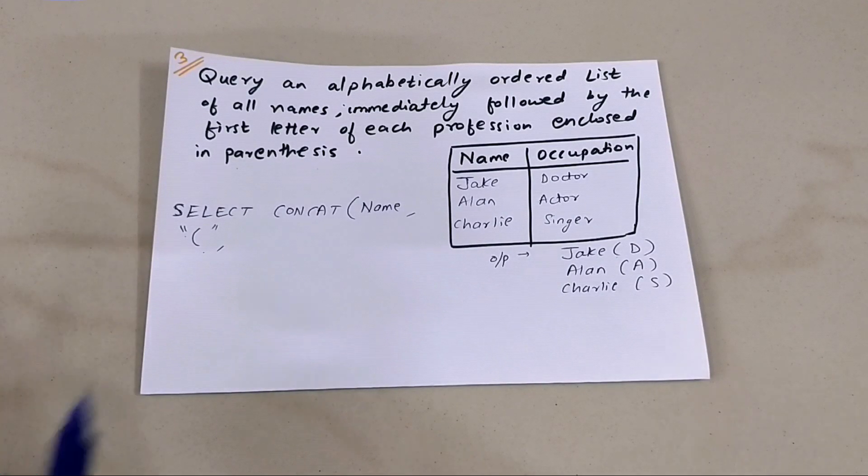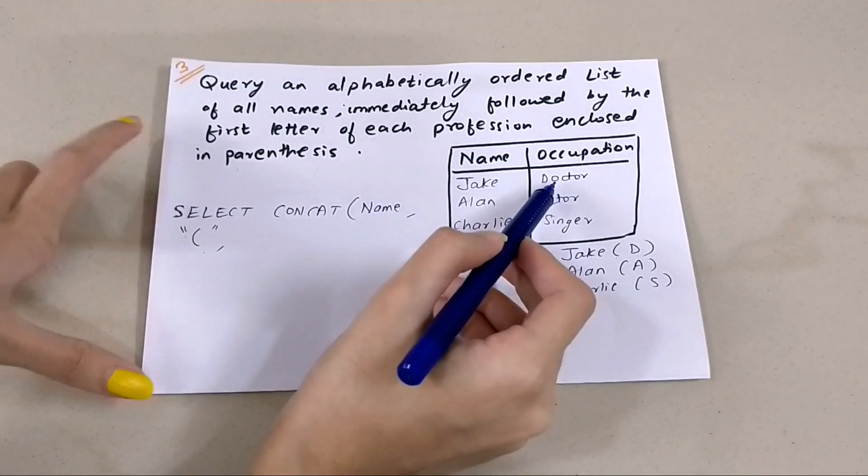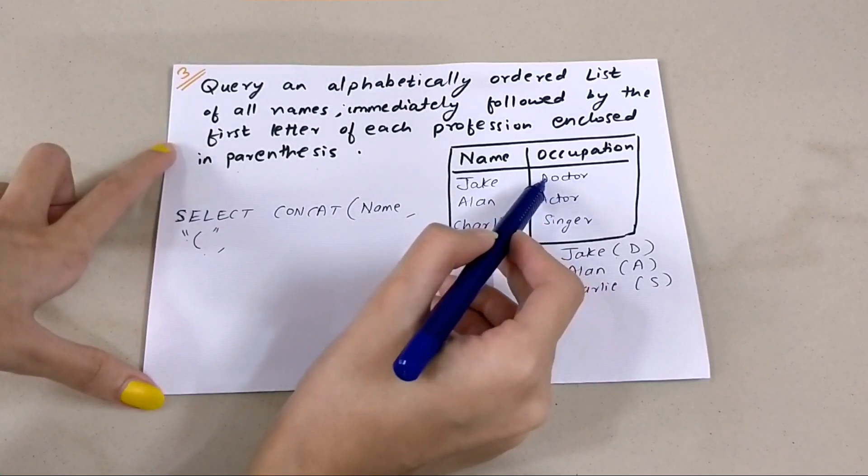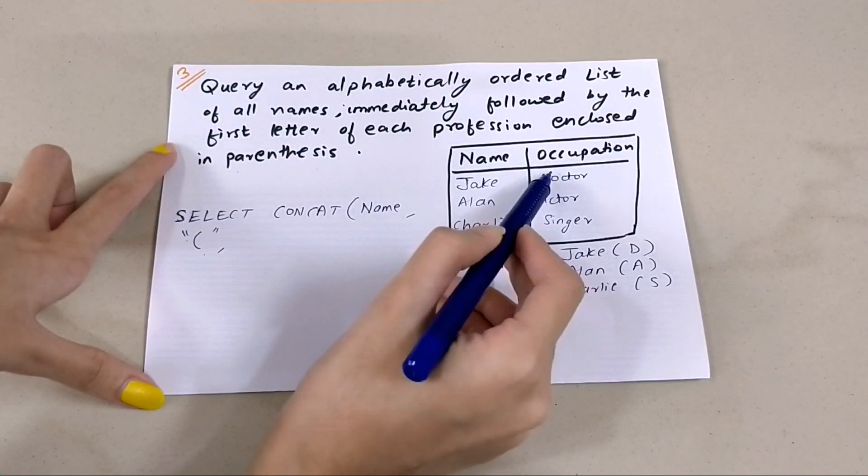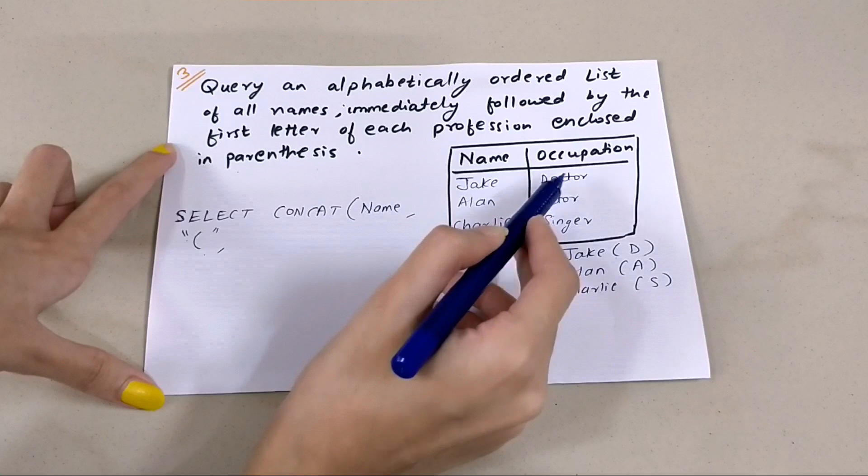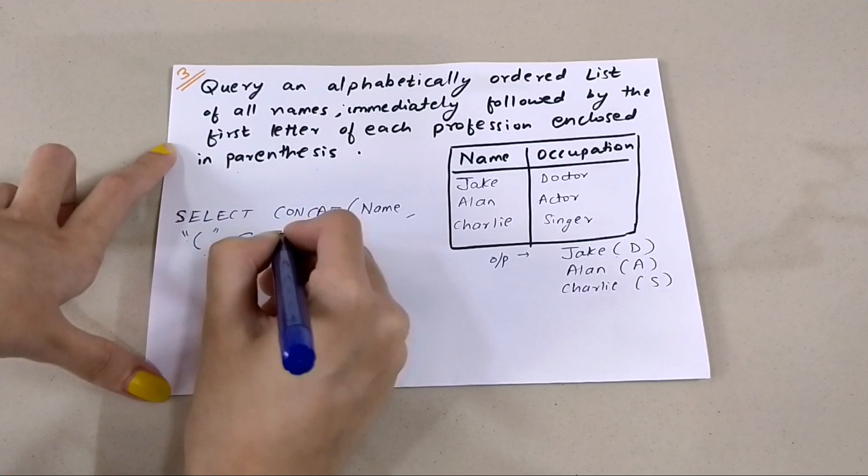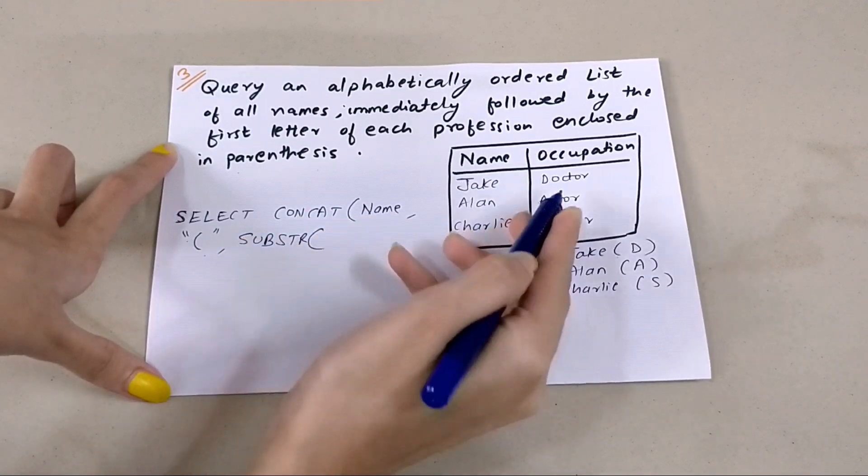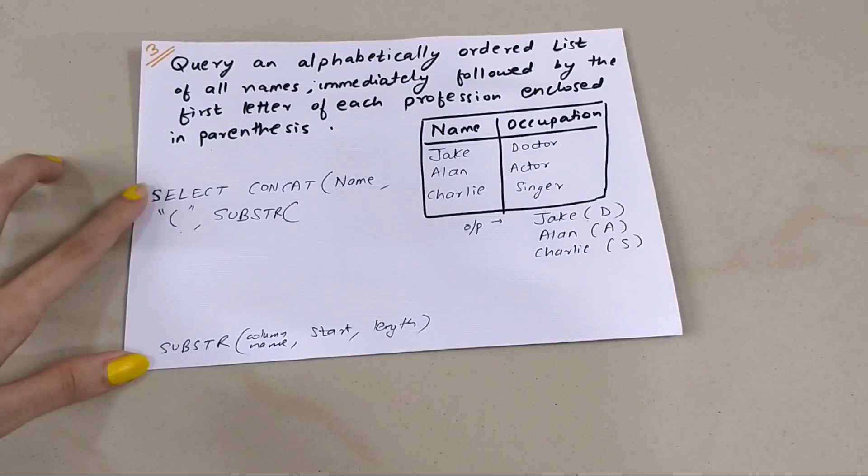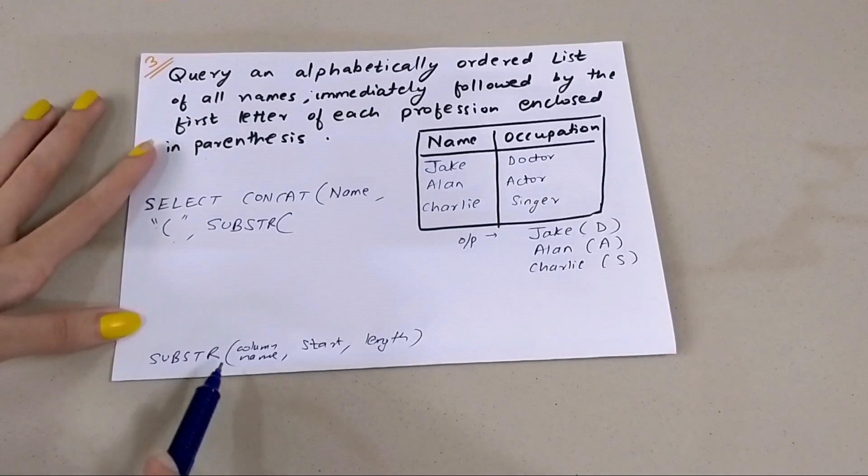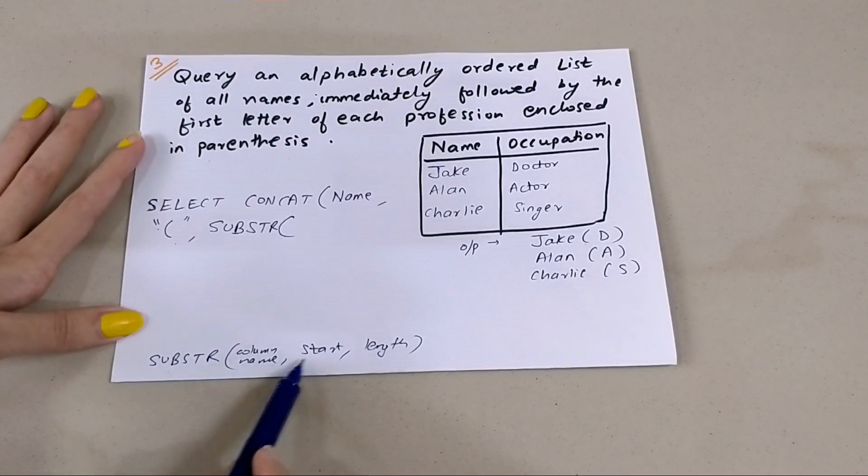Now, whenever you want to output a few letters out of a big name or anything, we use SUBSTRING. I have already made a video on SUBSTRING, so do check that out if you don't know how to use it. So SUBSTRING - this is the syntax for SUBSTRING, it has three fields.